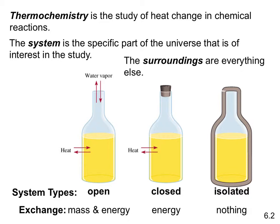Now we've established the study of heat change in chemical reactions. The first thing we need to do is define a few features of a reaction setup. The system is the part of the universe we're actually focusing on — whatever reaction flask or beaker is being studied. Everything else is considered the surroundings. The system is arbitrarily defined, and the surroundings are dictated by how you define the system.